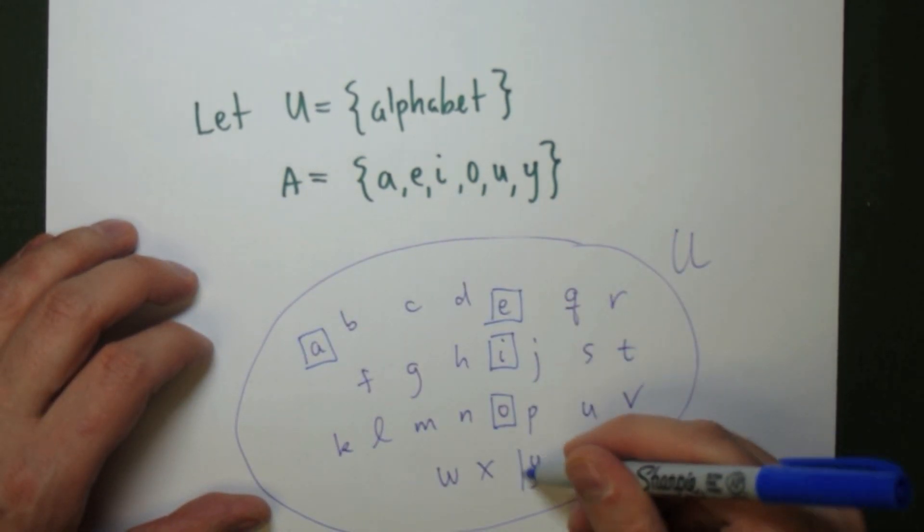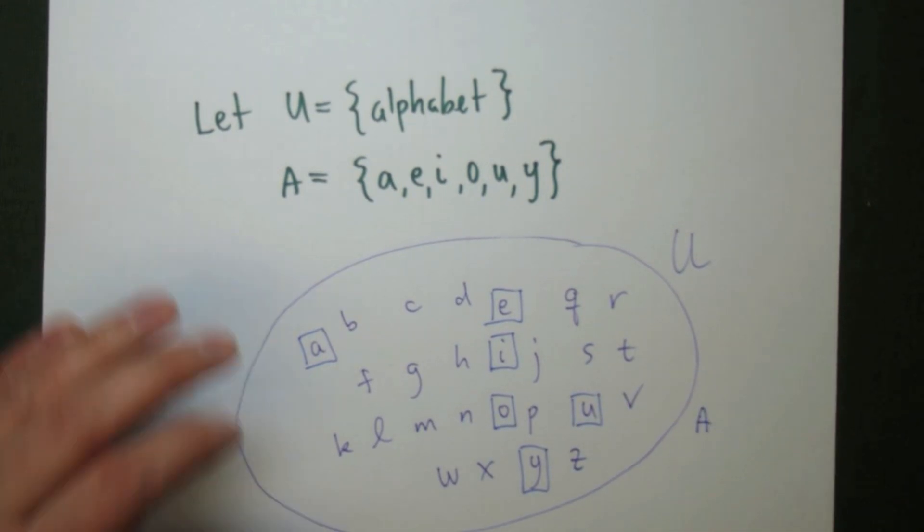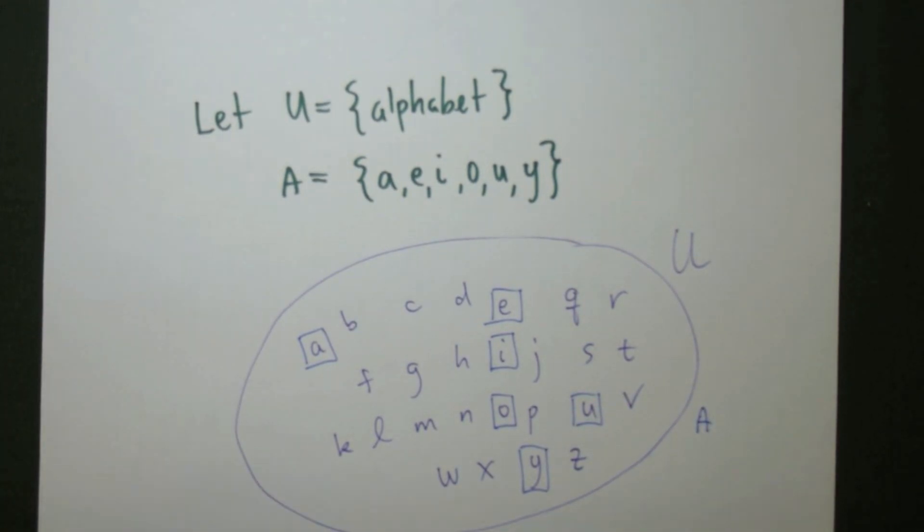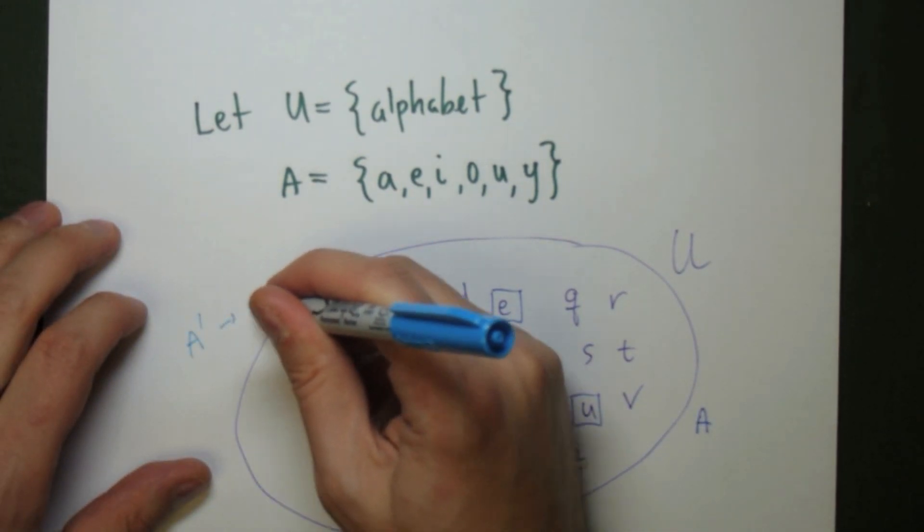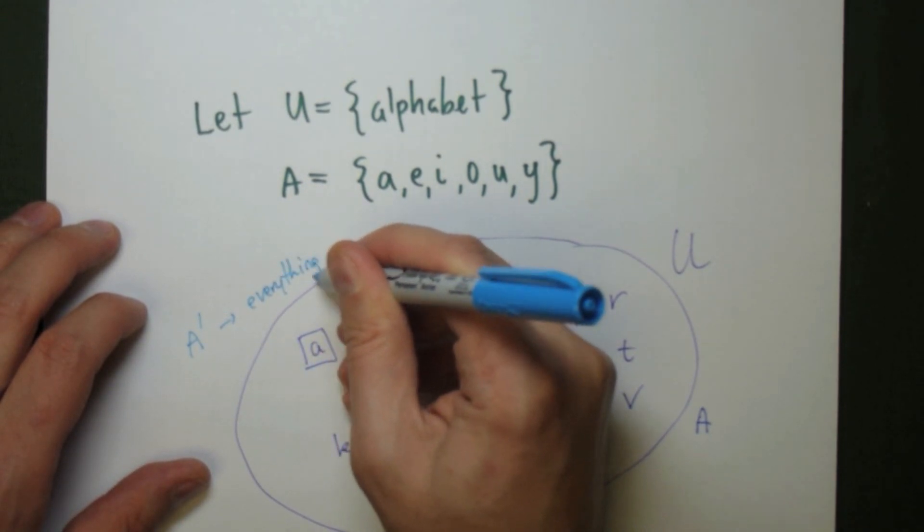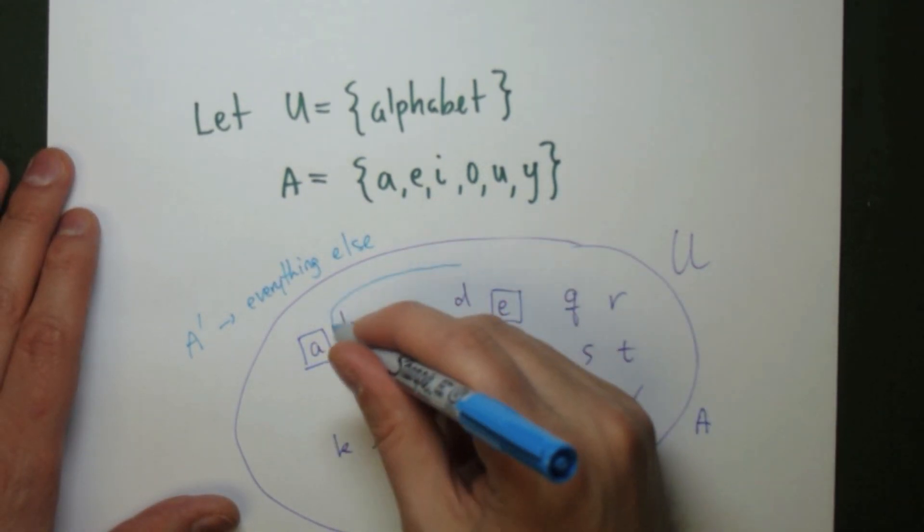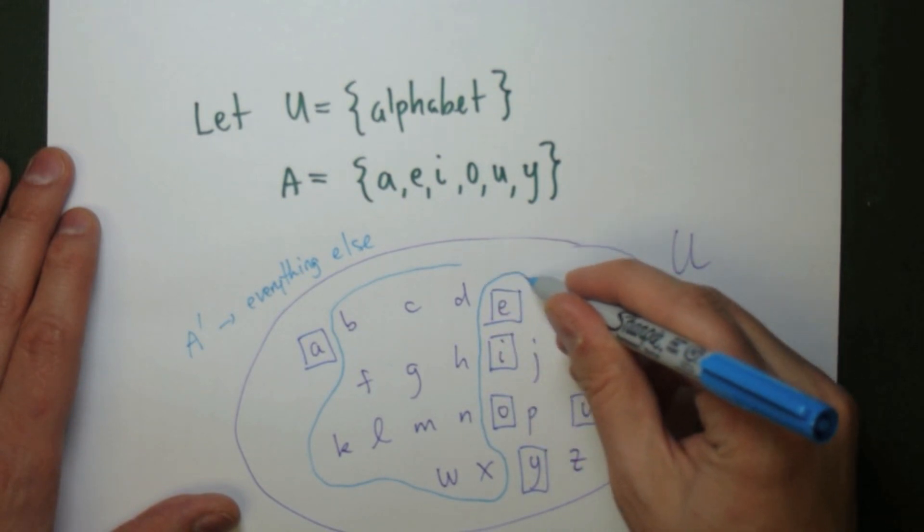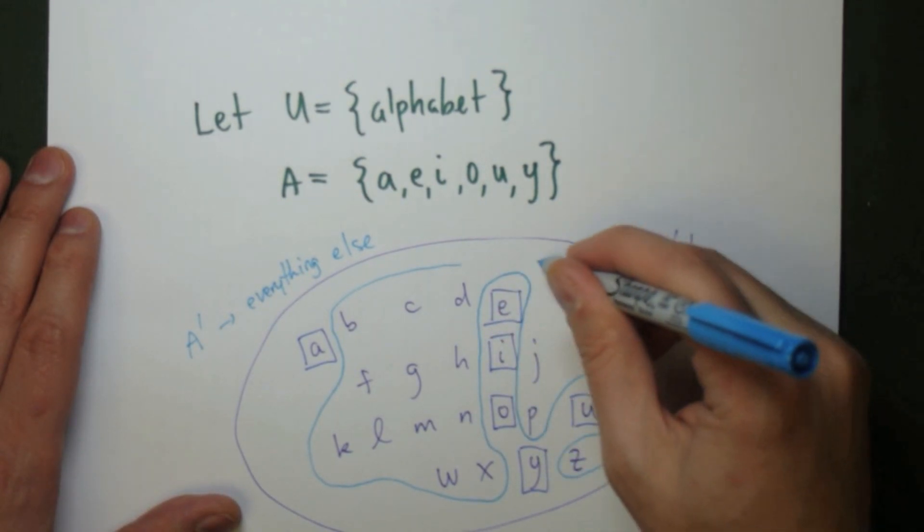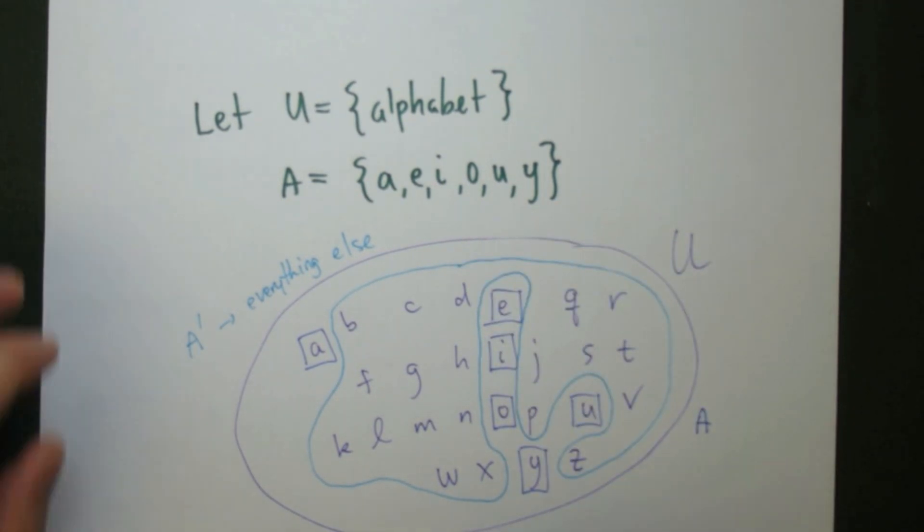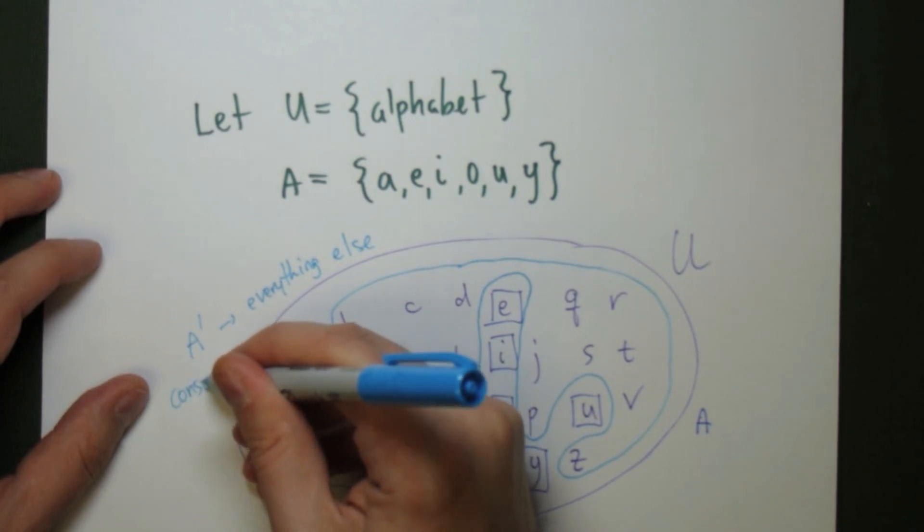Everything that's inside a box is our set A. And so the complement is going to be everything that's in the universe that isn't already included in A. So we circle it like this. Everything inside that strangely shaped circle is going to be the complement.